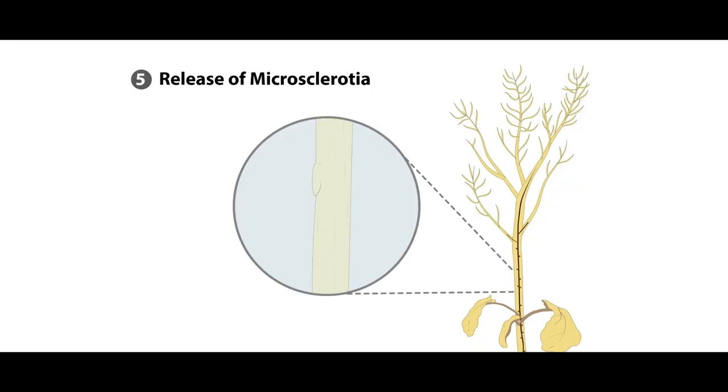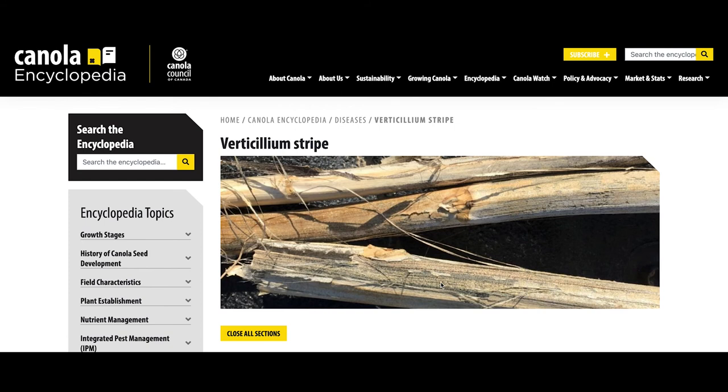While the plant begins to show progressively more intense symptoms of the disease, the microsclerotia in the stems cause a peeling back of the stem epidermis. At this point, the stem may take on a shredded appearance and the microsclerotia will be released into the soil where they will rest until stimulated to germinate again.